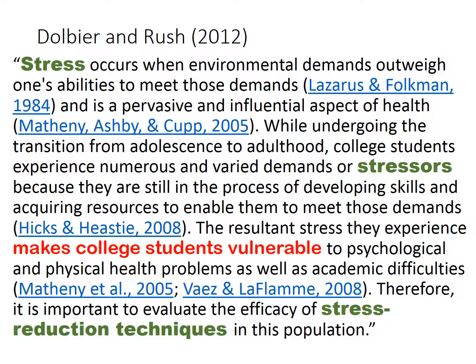Here's one example of how those criteria can be represented in a paragraph. This is from one of the articles you read, or might have read. The words in green are the variables — if you read this article, you might remember that they hypothesized that a particular stress reduction technique would reduce indicators of stress. The words in red are why we care. Note that they use citations to support each of the main ideas, including the definition of stress.